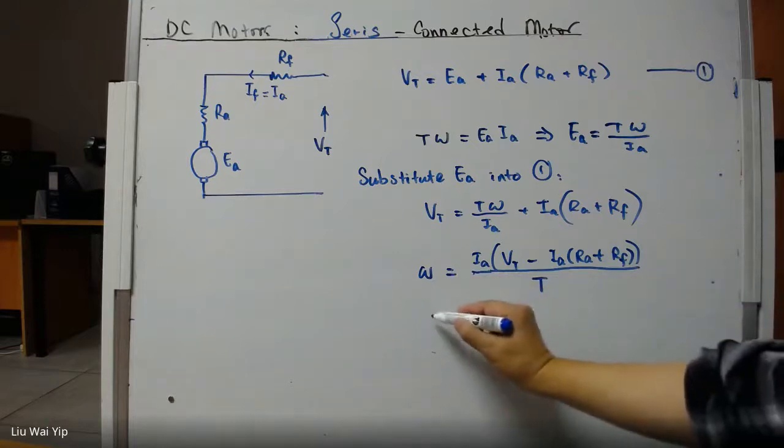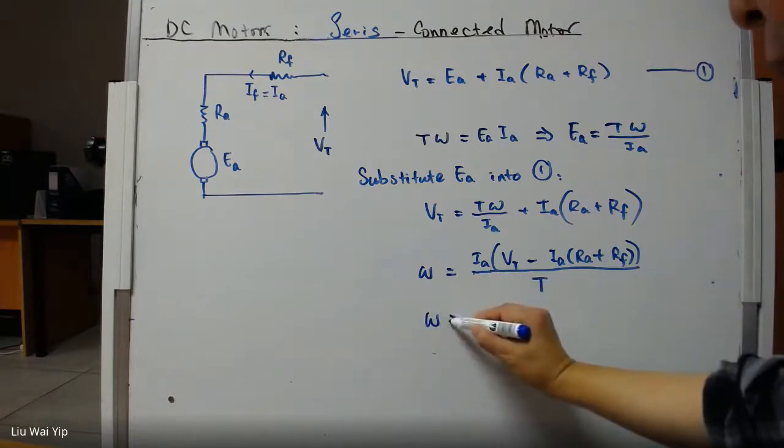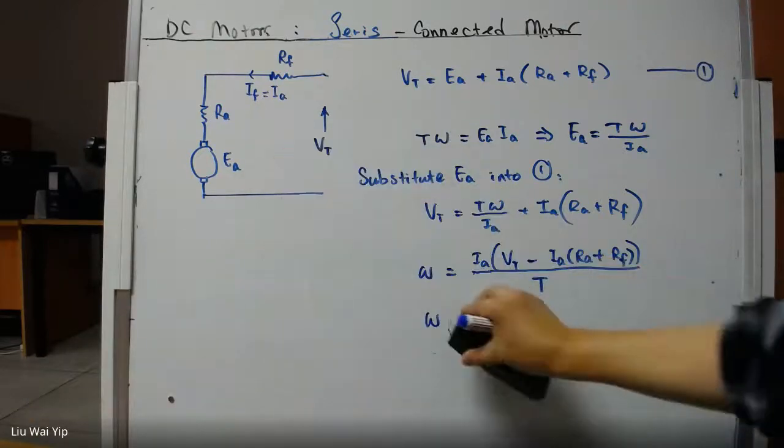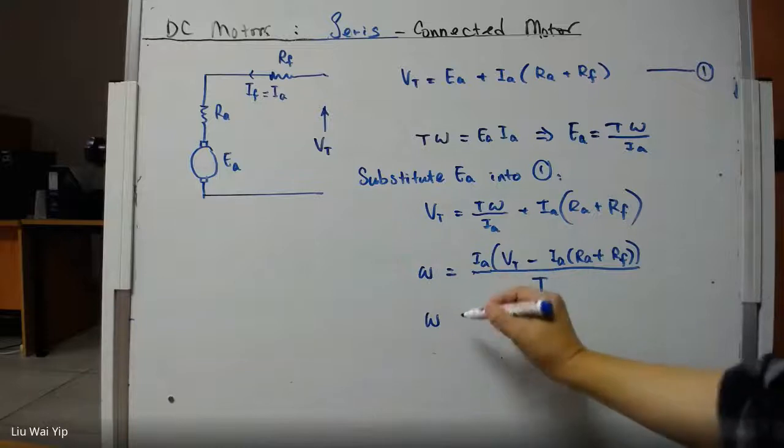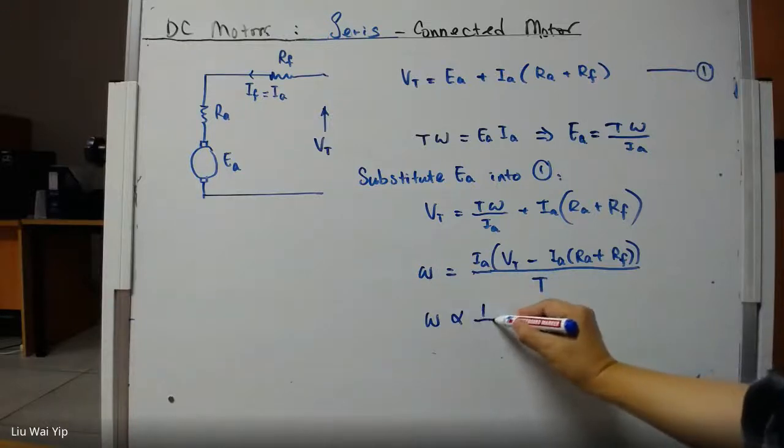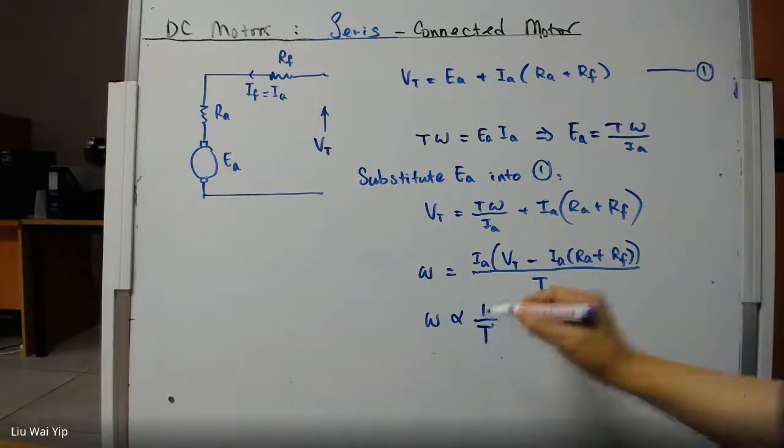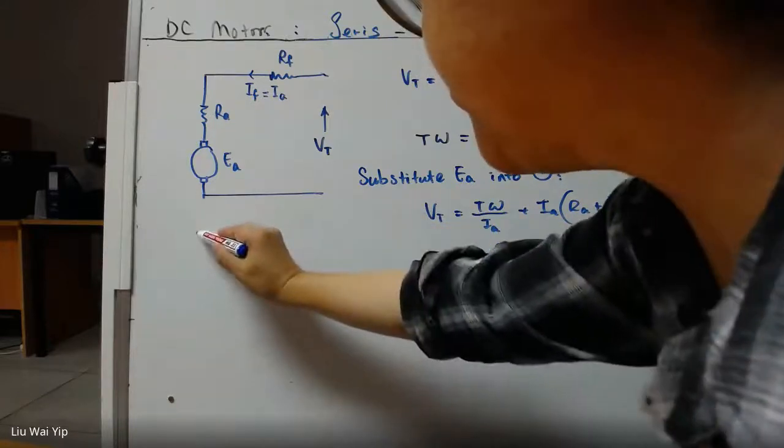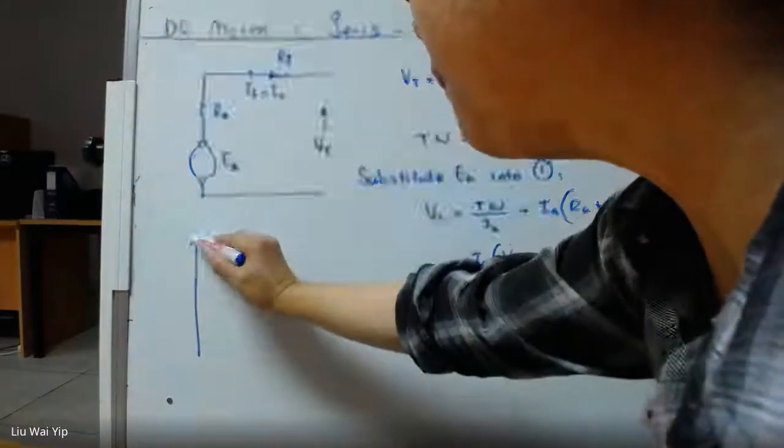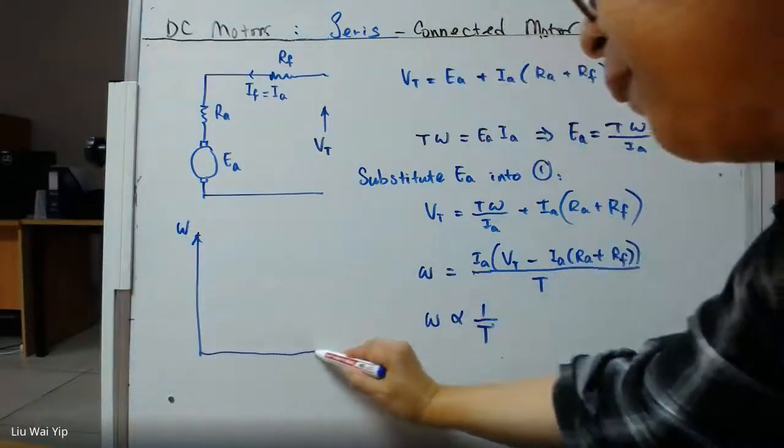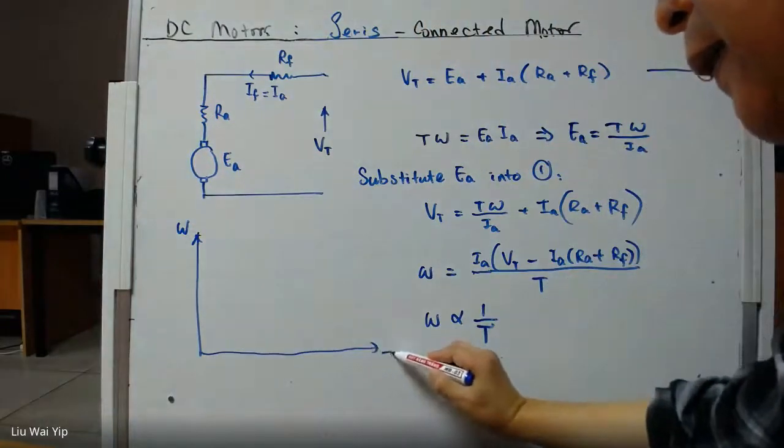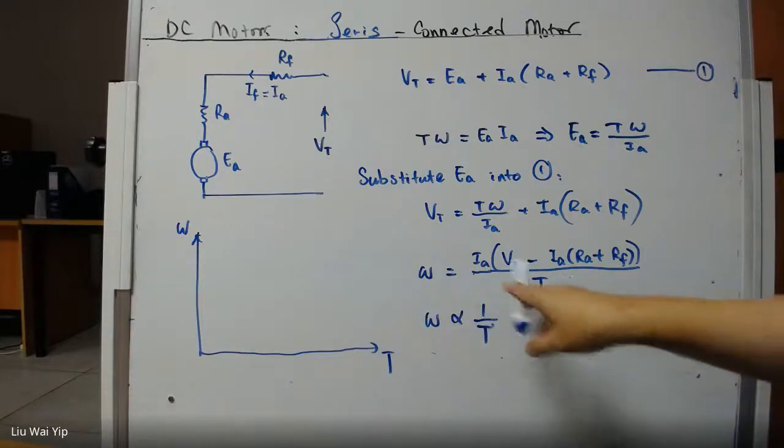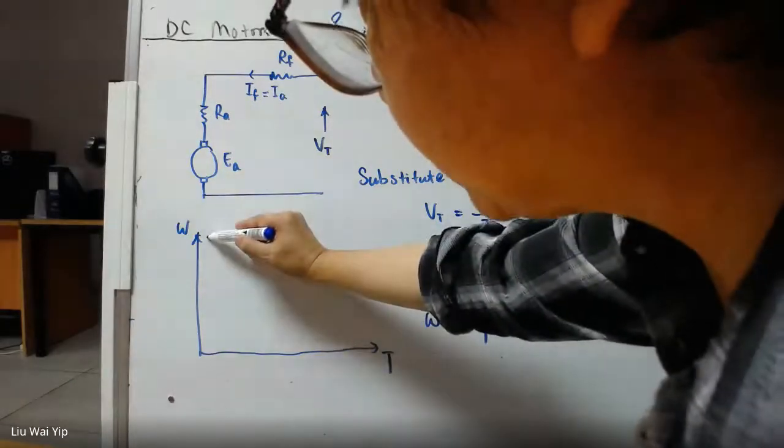Omega is proven to be inversely proportional to 1 over T. So we are going to plot the speed against the torque. We are going to get a curve relation like this.